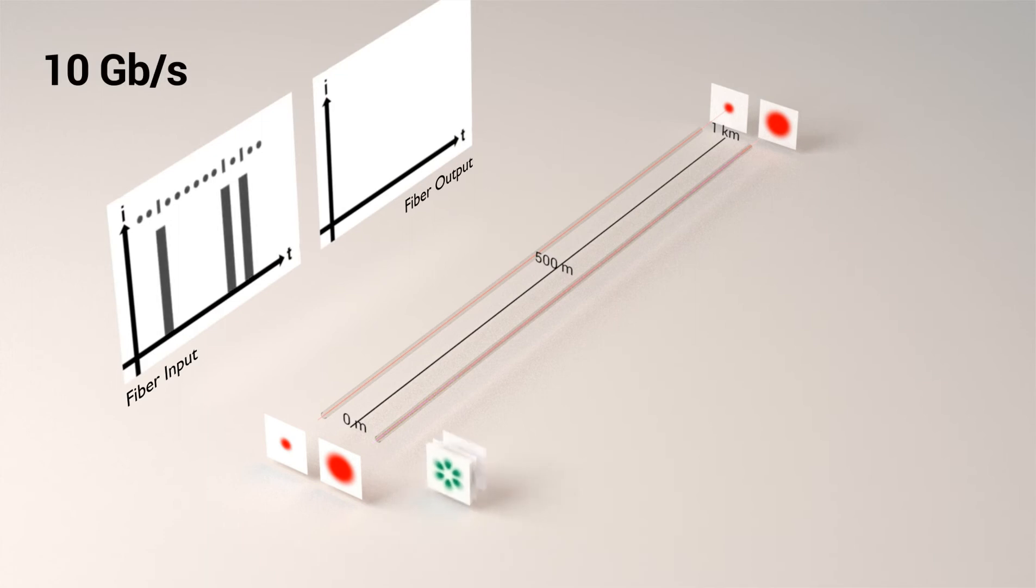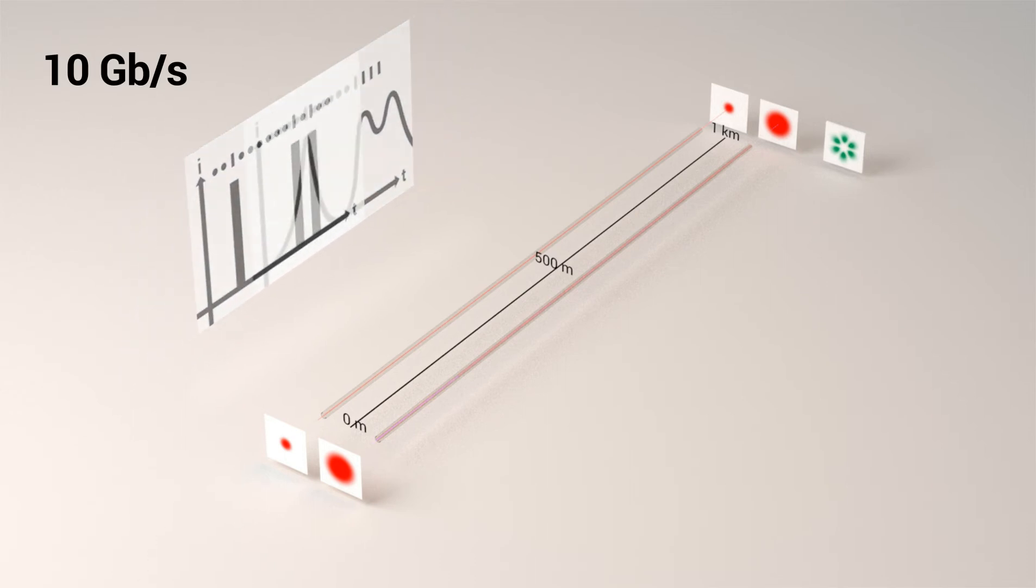But when throughput increases, duration of light pulses decreases dramatically. Thus, for a 10 Gb/s transmission, pulses 100 times shorter are completely distorted at the output of the fiber. This degraded signal leads to errors at detection and lower quality of transmission.